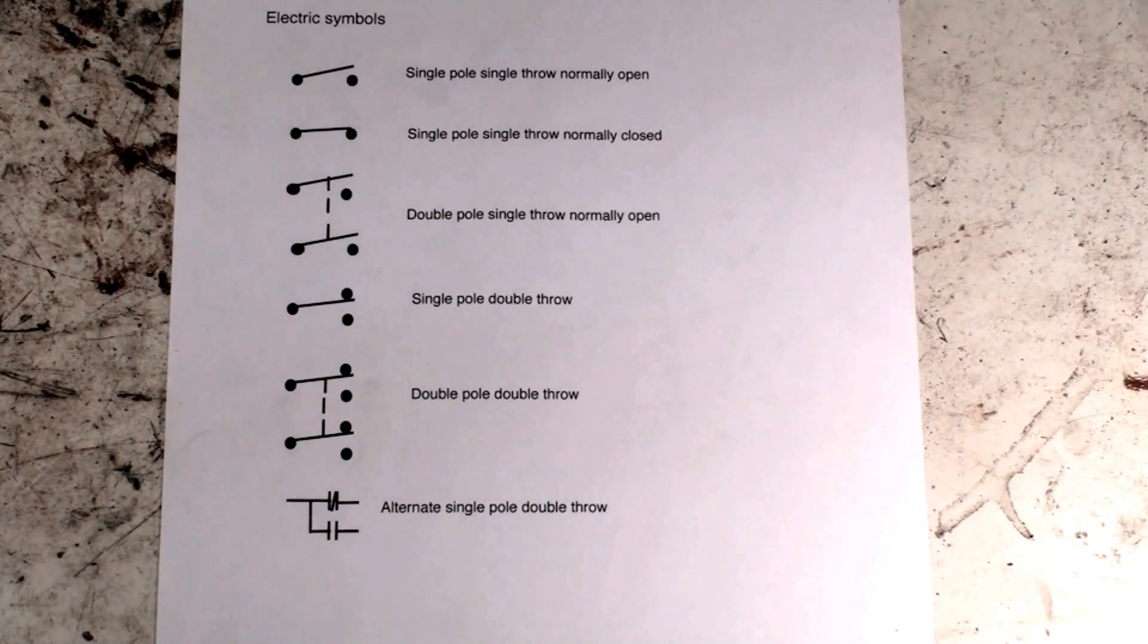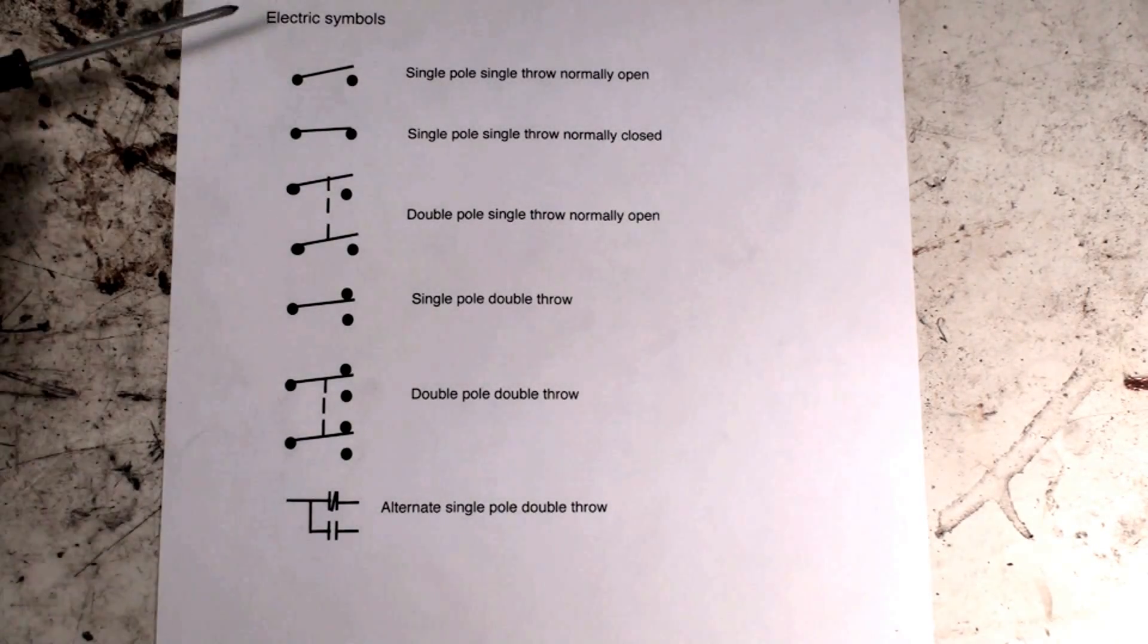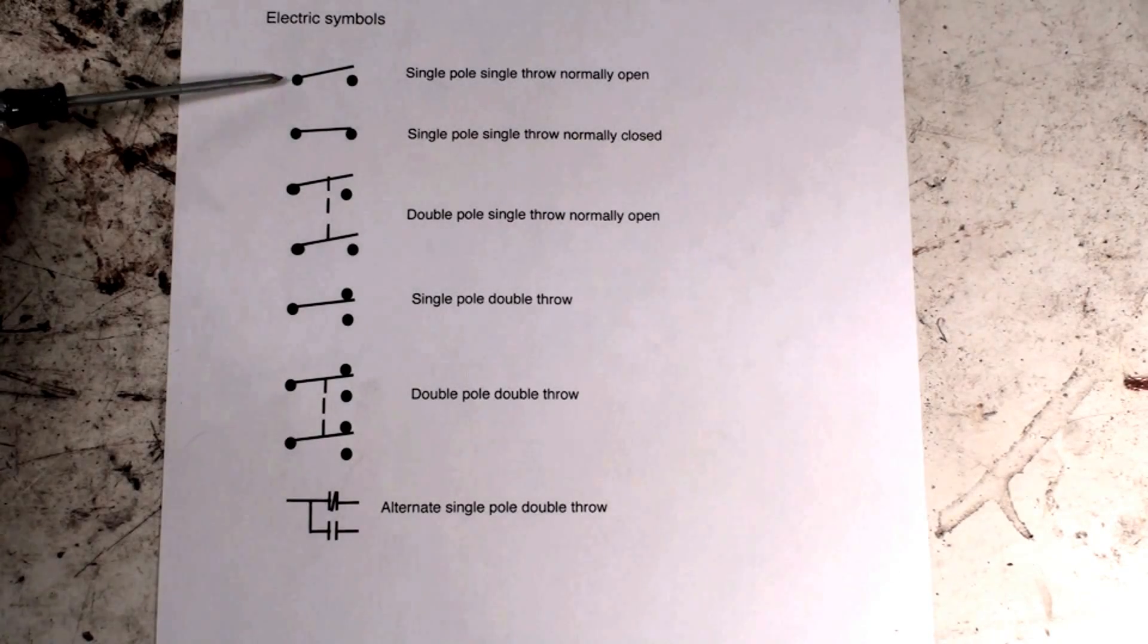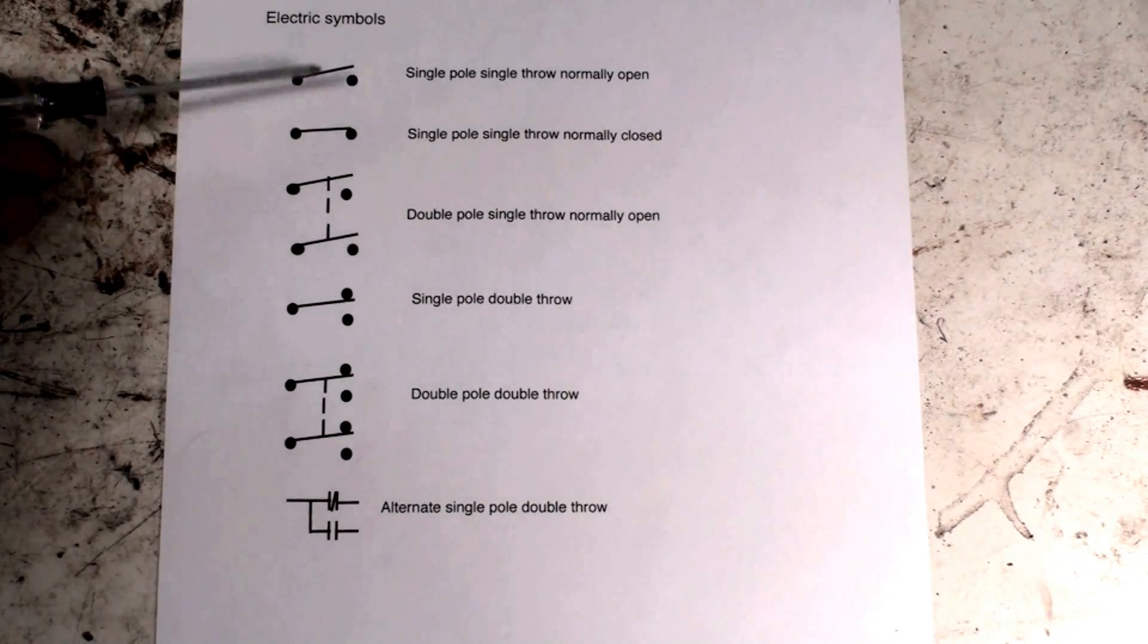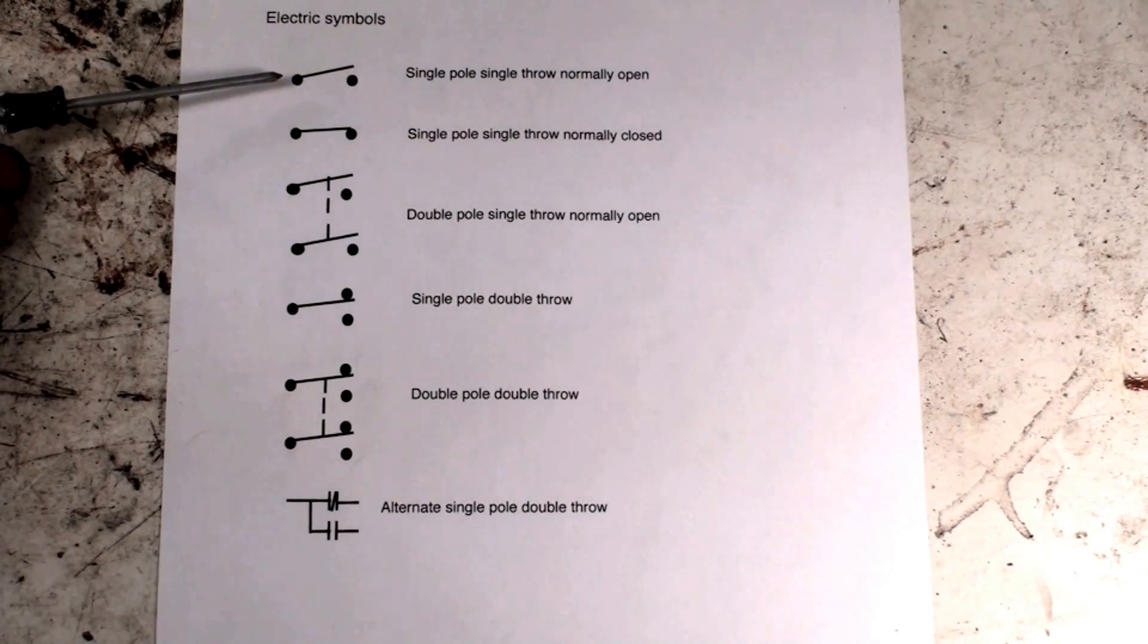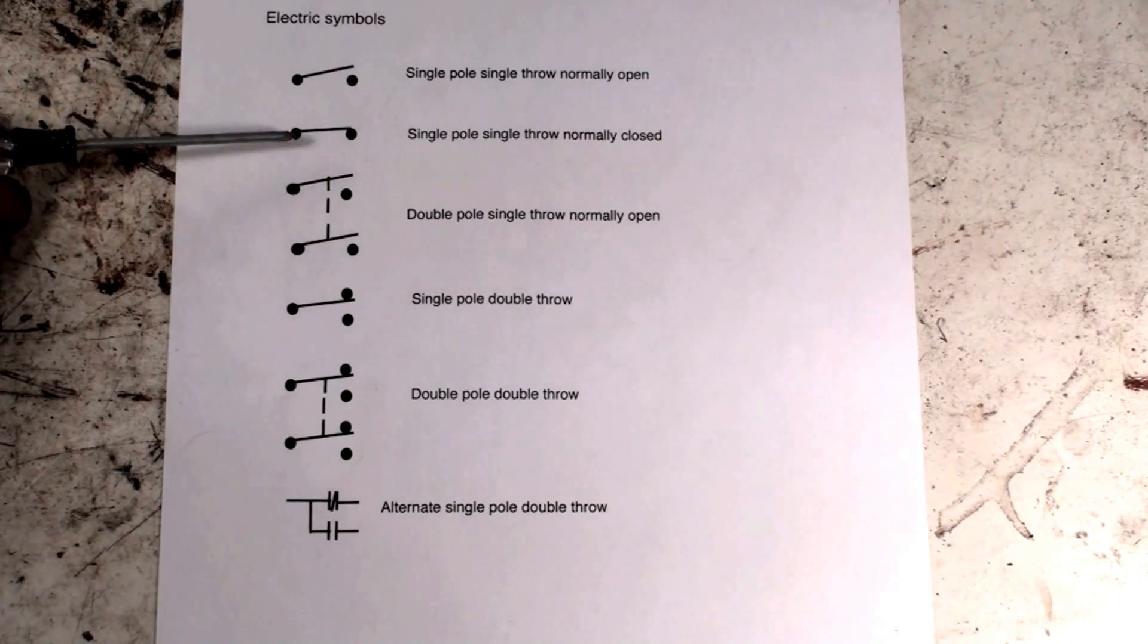This top one is just a single pole single throw normally open switch. Now that's a control switch, it's manually operated - there's nothing that moves it except someone wants to turn it on. Here's a single pole single throw switch that is normally closed. It would be assumed that it would normally be in a closed position.